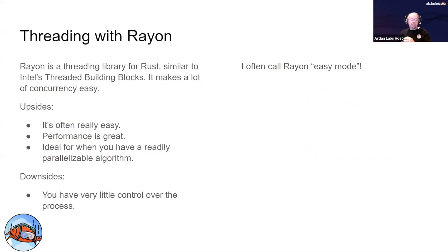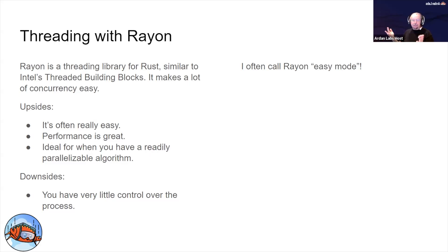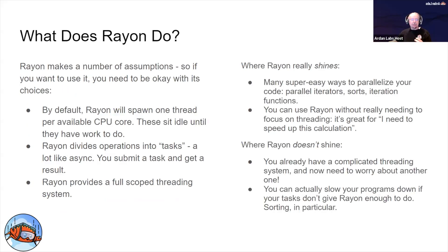Let's talk about Rayon. Rayon is almost as old as Rust. If any of you have used Intel's Threading Building Blocks for C++, that was a lot of the inspiration for it. The upsides of Rayon are that it's really easy in most cases and performance is fantastic. If you have an algorithm that readily divides up to be parallelizable, Rayon can often allow you to write parallel code with very little effort. The downside is that you don't have as much control over the process, so if you're writing something really timing-sensitive or complicated, Rayon may not be for you.